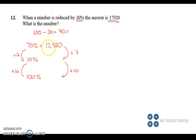So if you do 17,920 divided by 7, you will get 2,516. And if you times that by 10 on your calculator, you will get 25,600. And that is the answer.